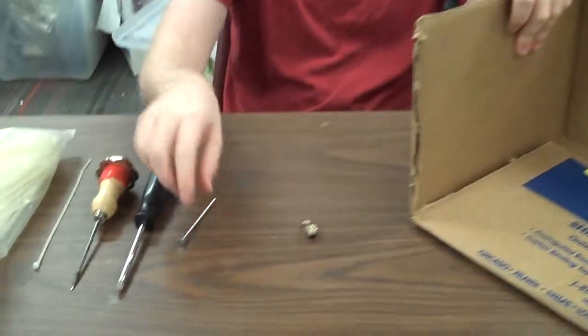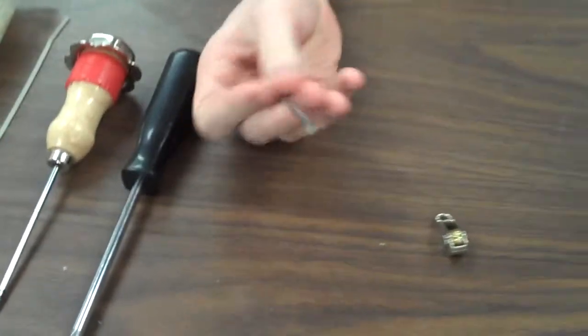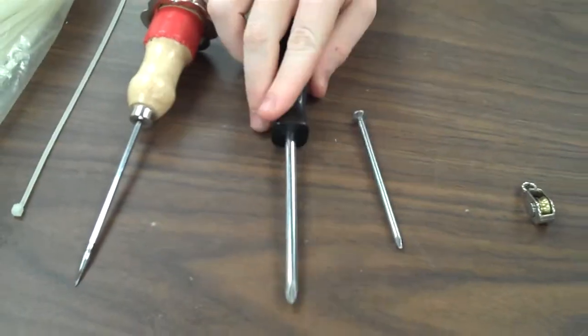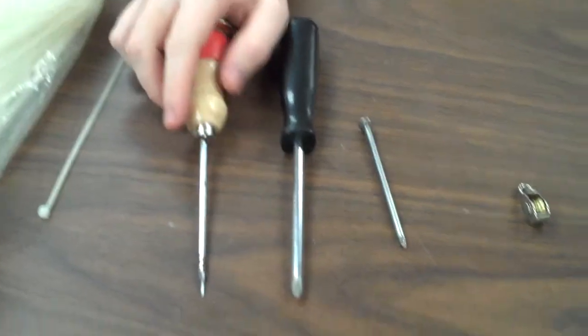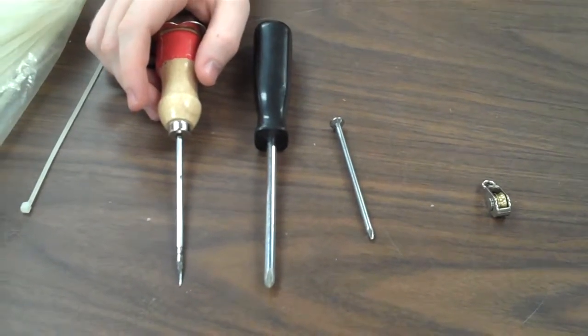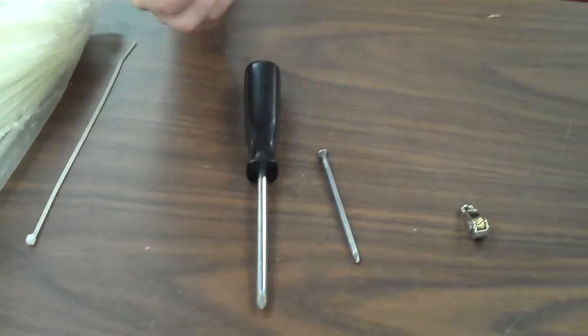So for your hole punching tool you can either use a nail, a screwdriver, or an ice pick. It really just depends on the size hole that you want in your cardboard and how precise you want your hole. I'm going to be using the ice pick.